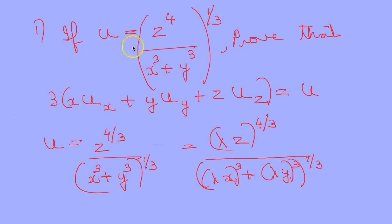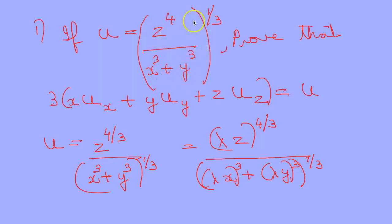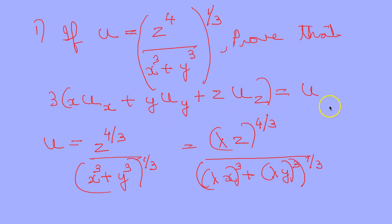Based on this, we have a problem. If u is a function of x, y, z — that is u = z^(4/3) / (x³ + y³)^(1/3) — prove that 3(x·u_x + y·u_y + z·u_z) = u.